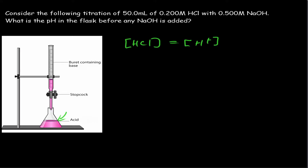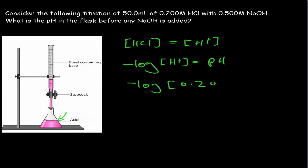To get the proton concentration, it's simply the same as the concentration of the acid to begin with. And to get pH, we just need the negative log of the H⁺ concentration, and that gives us our pH. So negative log of 0.2 molar, because that is the concentration of the acid, will give us a value of 0.69.